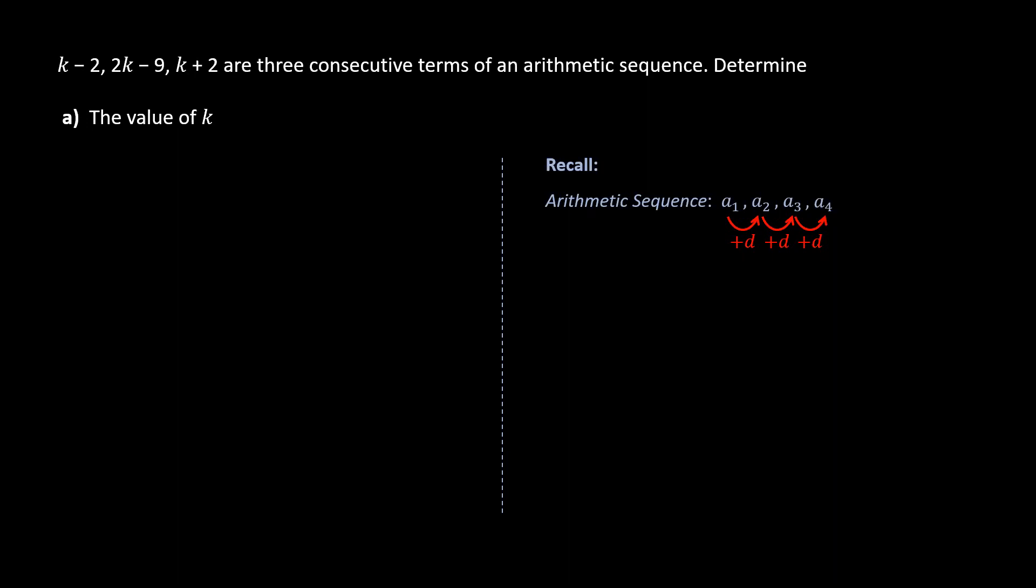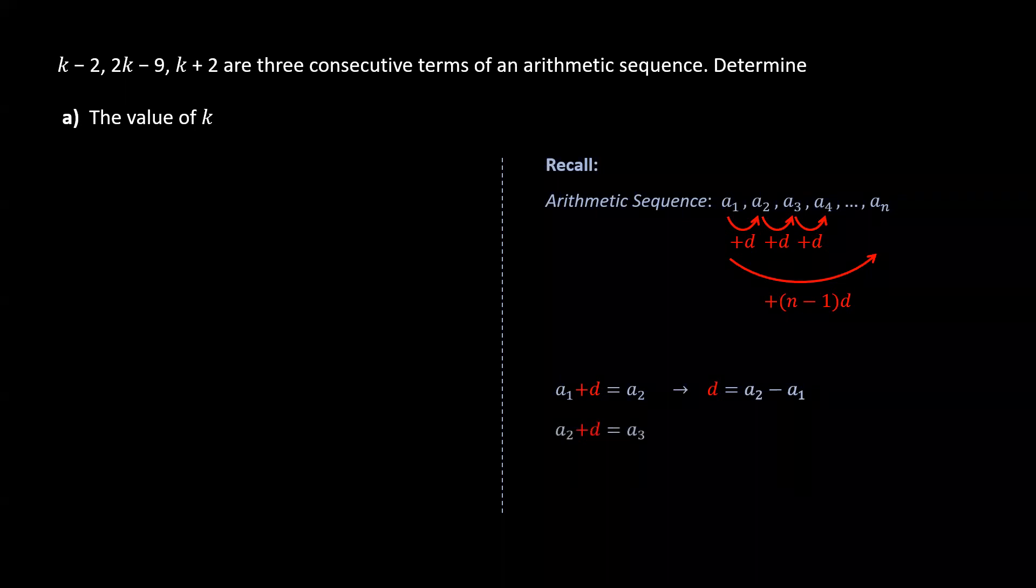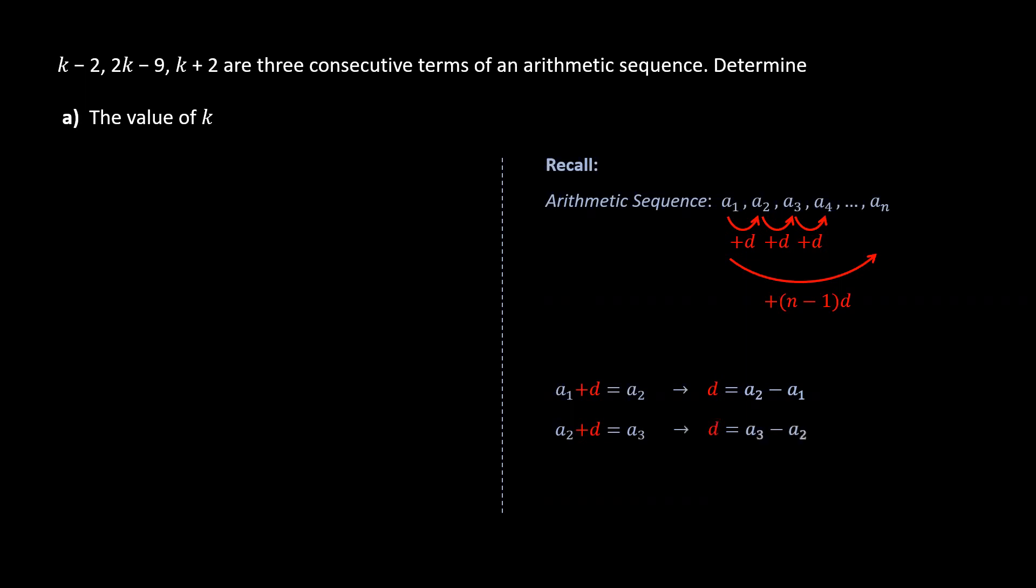The final term, or the nth term, can be obtained by adding (n-1)d to the first term. So because a1 plus d equals a2, we can rearrange for d and get d equals the difference between the first two terms. Also, we have a2 plus d which equals a3. We could rearrange and isolate d to get the difference between the third and second term.